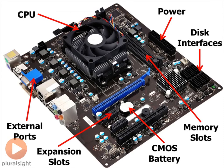Moving clockwise around the screen, we next have power. You'll see I'm pointing to a connector — it's a black connector with a bunch of holes in it. That is where something called the power supply — which will get a lesson of its own — connects to the motherboard. The power supply provides power to the motherboard by connecting into that spot right there.